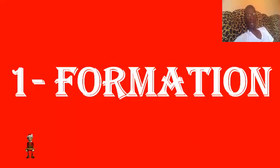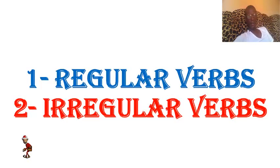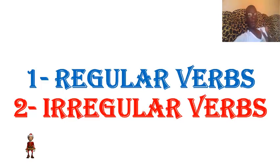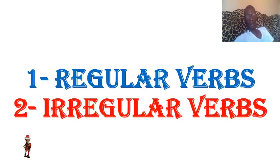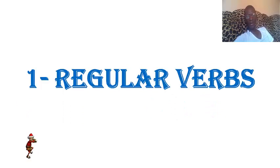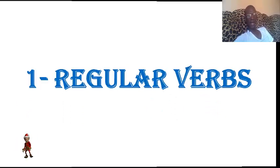Now, the first part is formation — comment former le preterite. Before learning how to use the preterite, you have to divide verbs into two parts: les verbes réguliers et les verbes irréguliers. So you have regular verbs and irregular verbs. We start with regular verbs. Qu'est-ce qu'un verbe régulier en anglais?